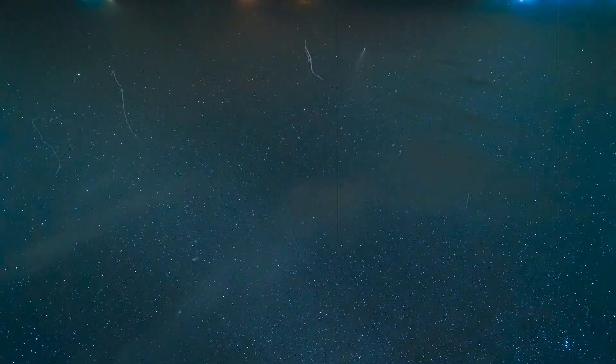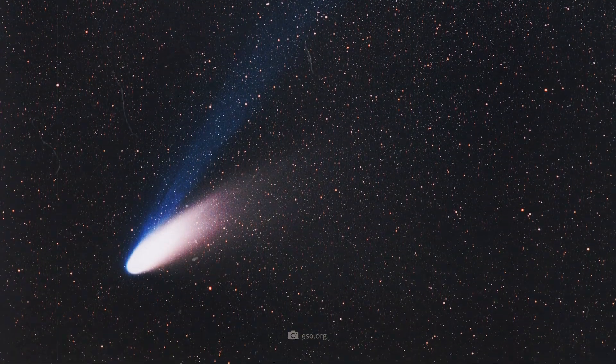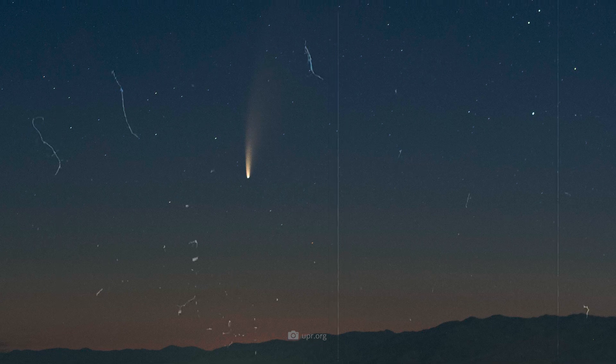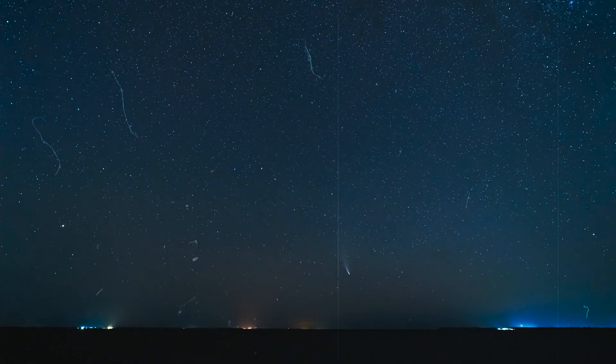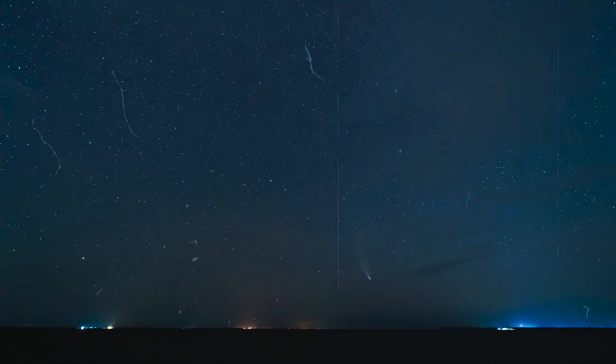Scientists expect Tsuchinshan-ATLAS to reach a brightness of about 0.7 magnitude. By comparison, Hale-Bopp reached a magnitude of negative 1.0, and Neowise, the comet visible in 2020, reached a brightness of 0.5. So, we can look forward to a spectacular sight that will probably thrill us throughout October.